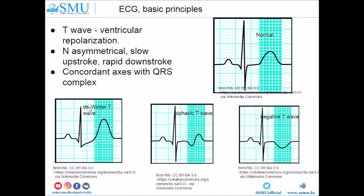The second graph demonstrates the winter T-wave, which can be seen in myocardial infarction. In this case, there is an upsloping ST depression that leads into a hyperacute T-wave. The next graph represents a biphasic T-wave, consisting of two phases — first negative, then positive.